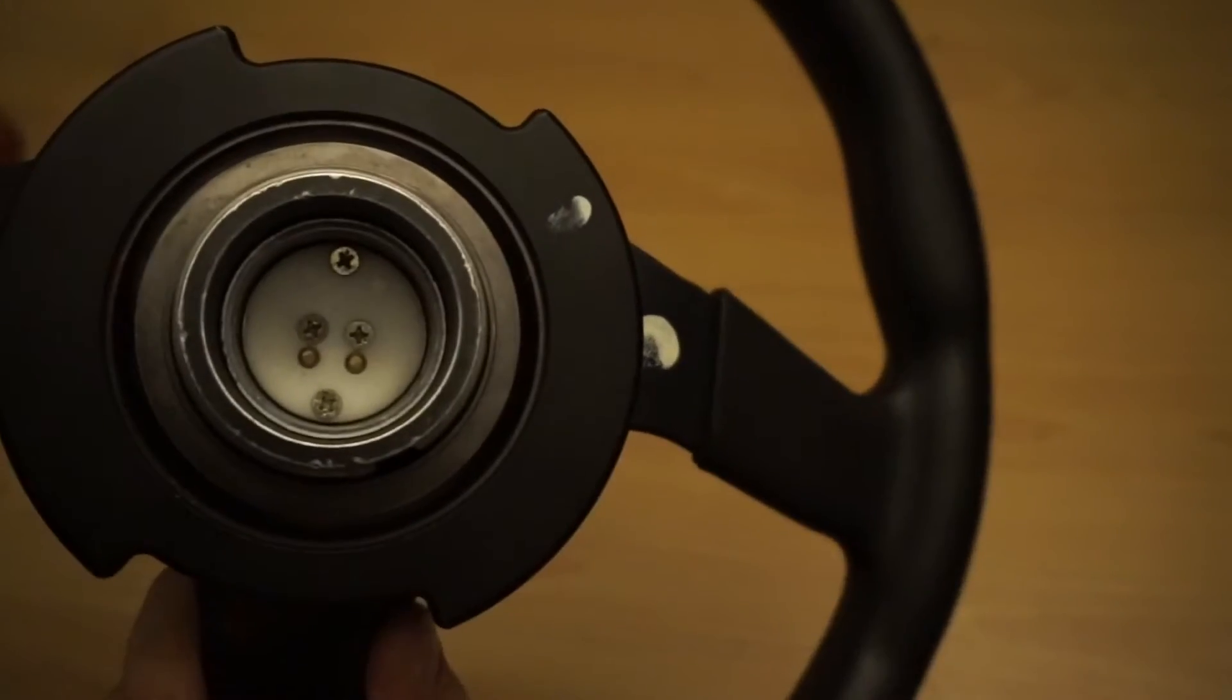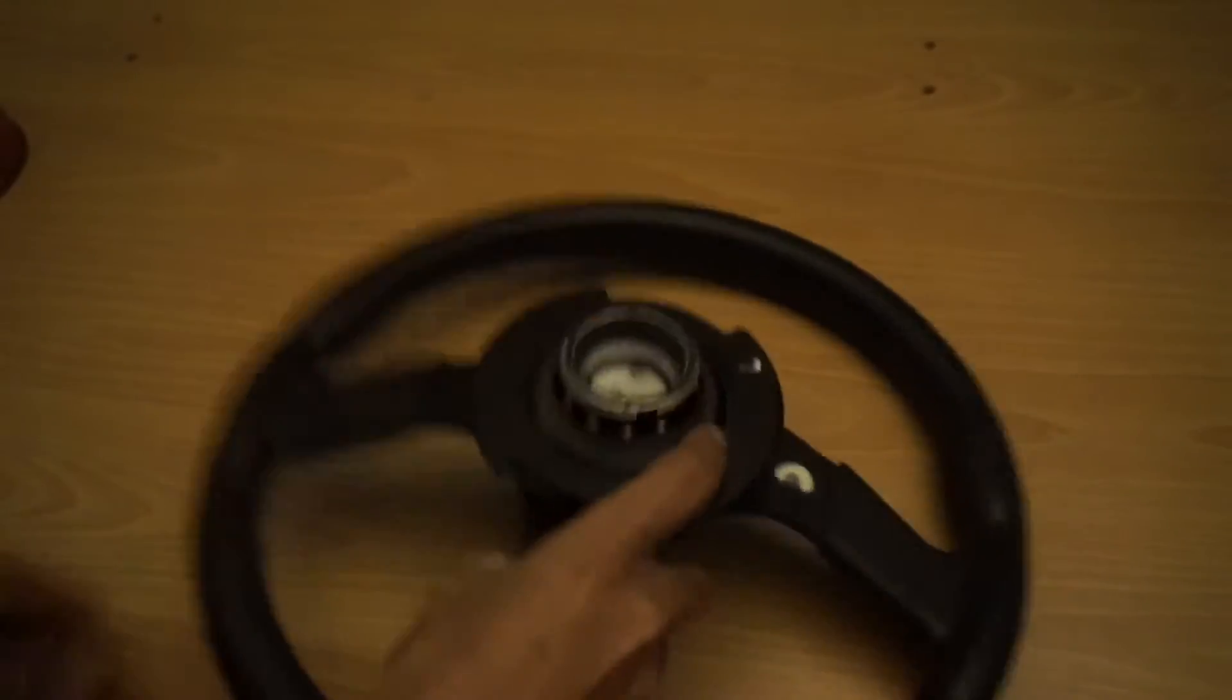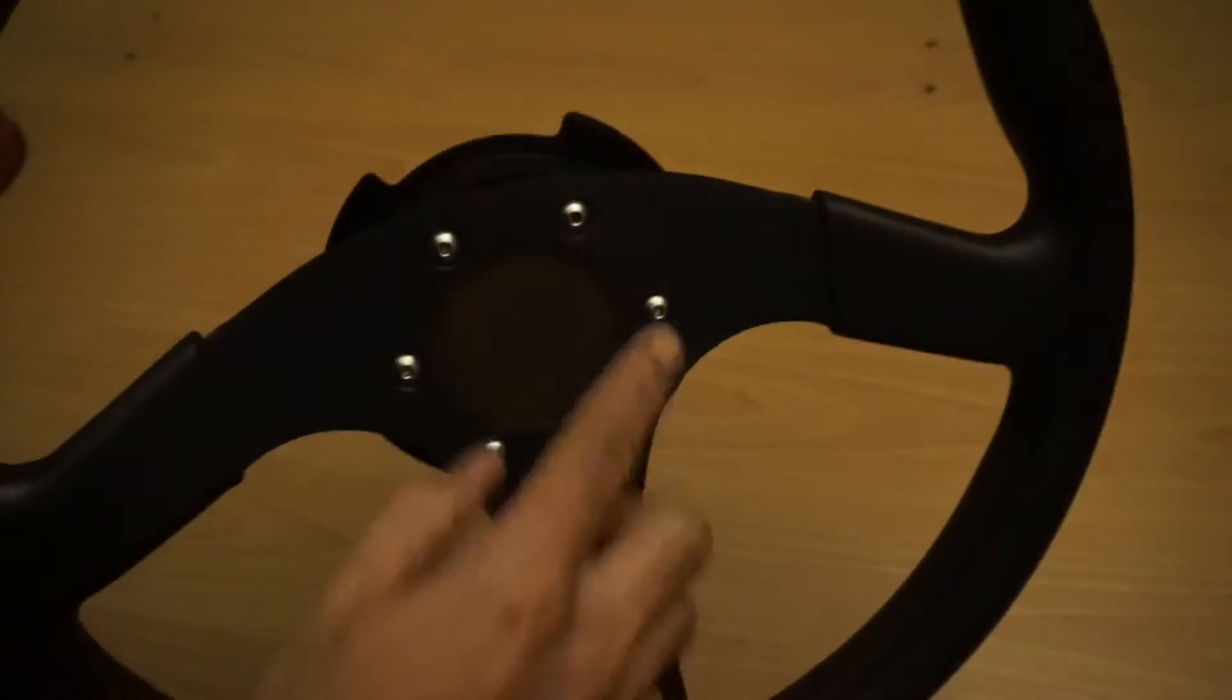It basically has a piece of sheet metal that I put in there with a little button right there. Push it, the horn goes off - the little contact points for the horn. First thing I'm gonna do is take off these Allen screws.